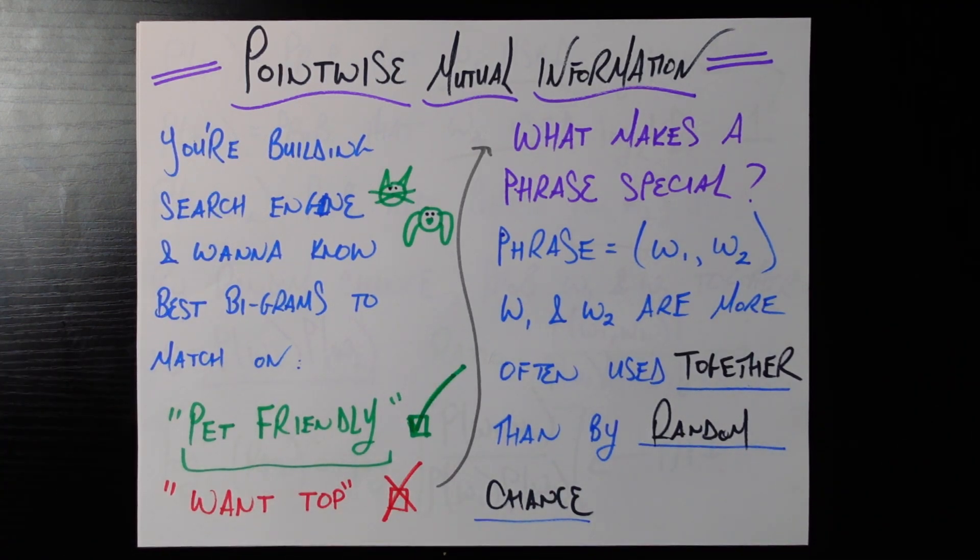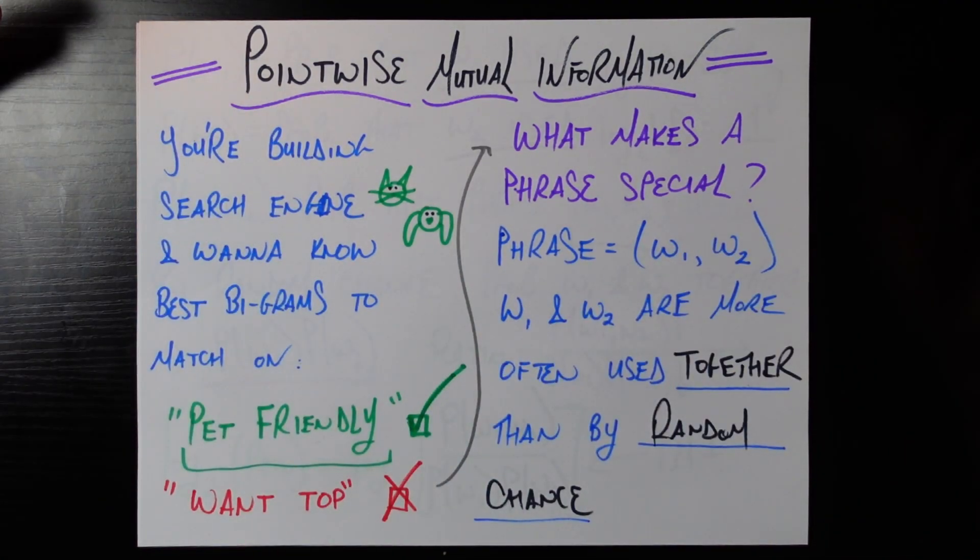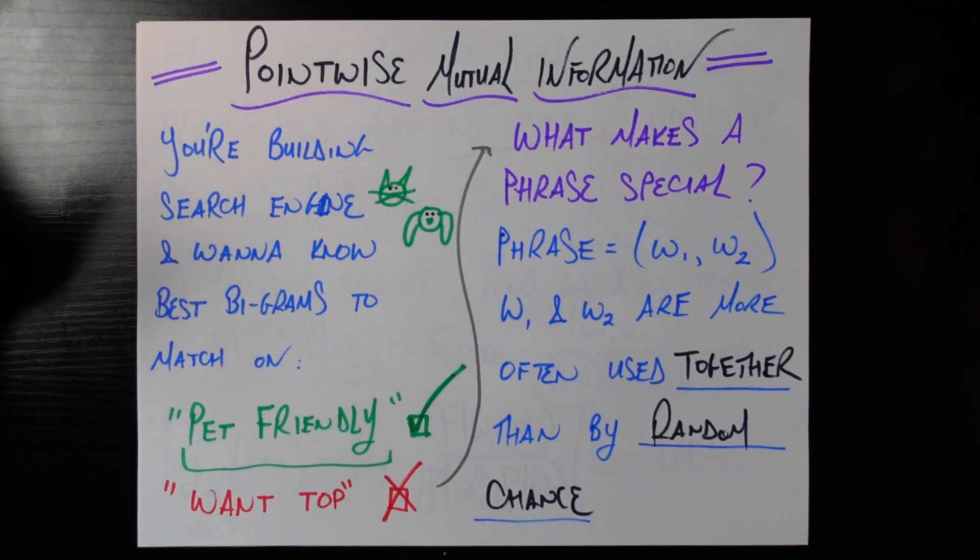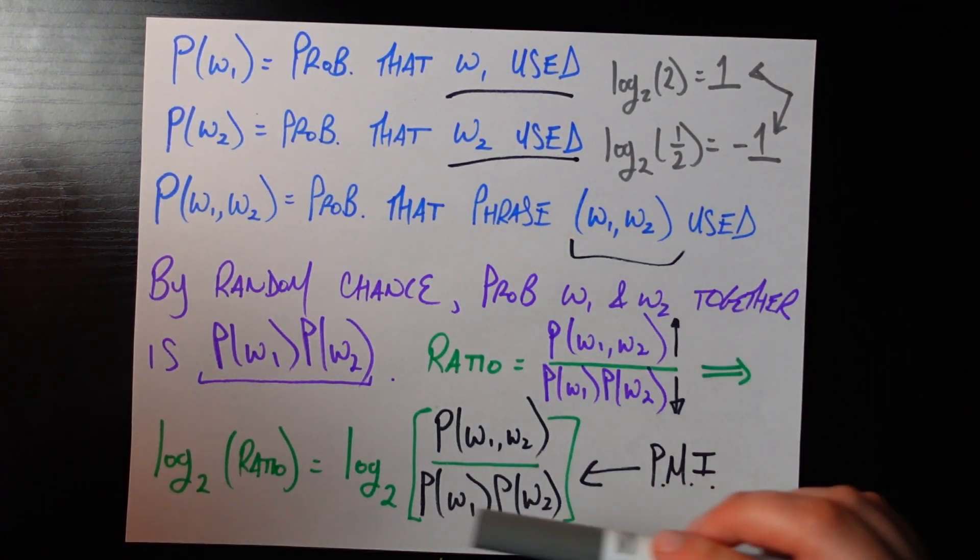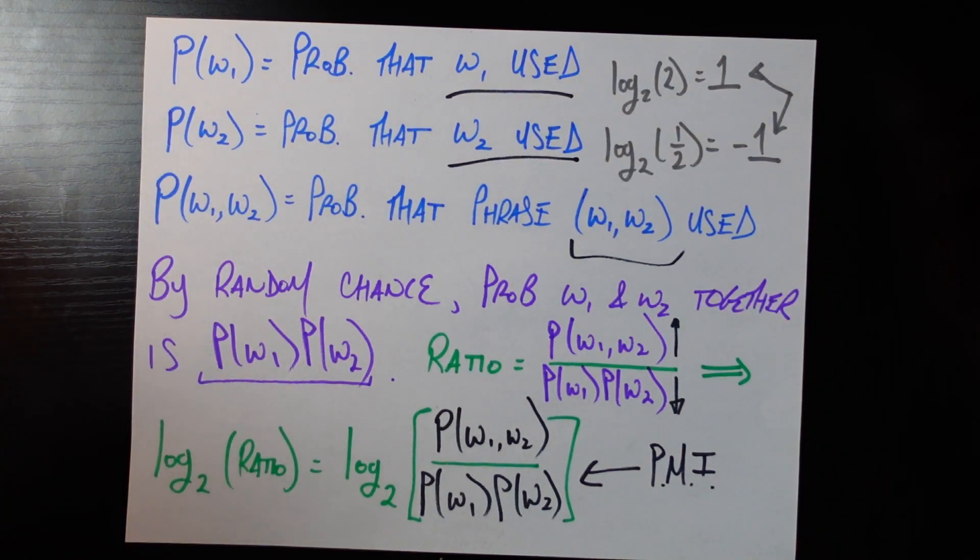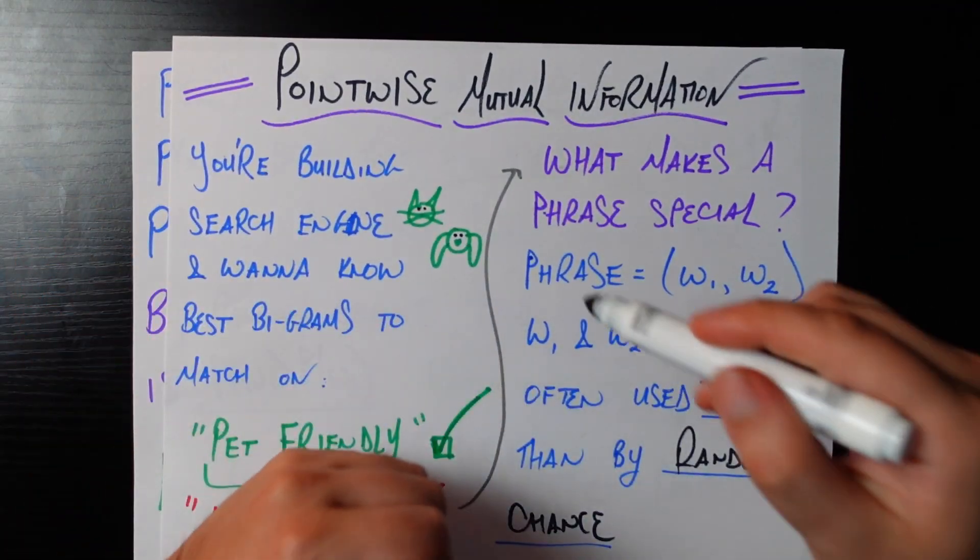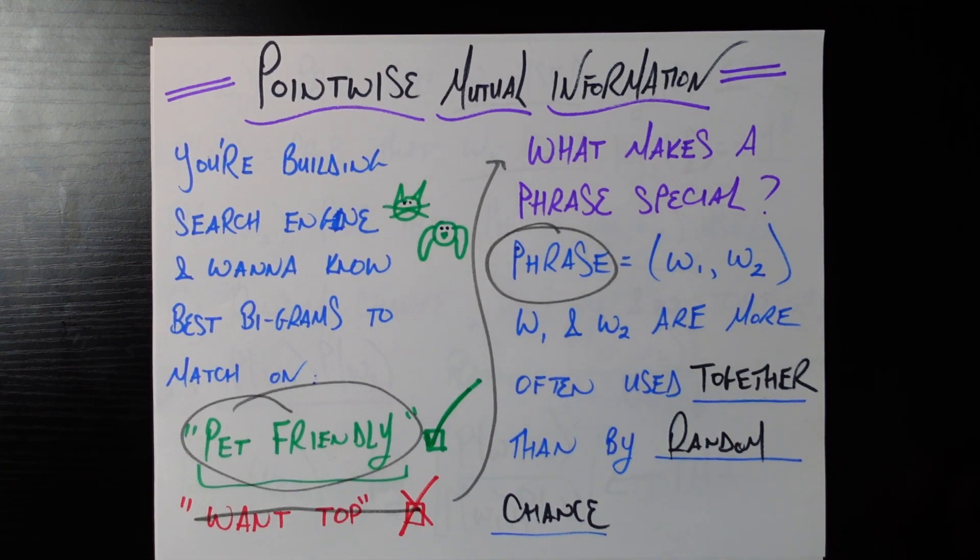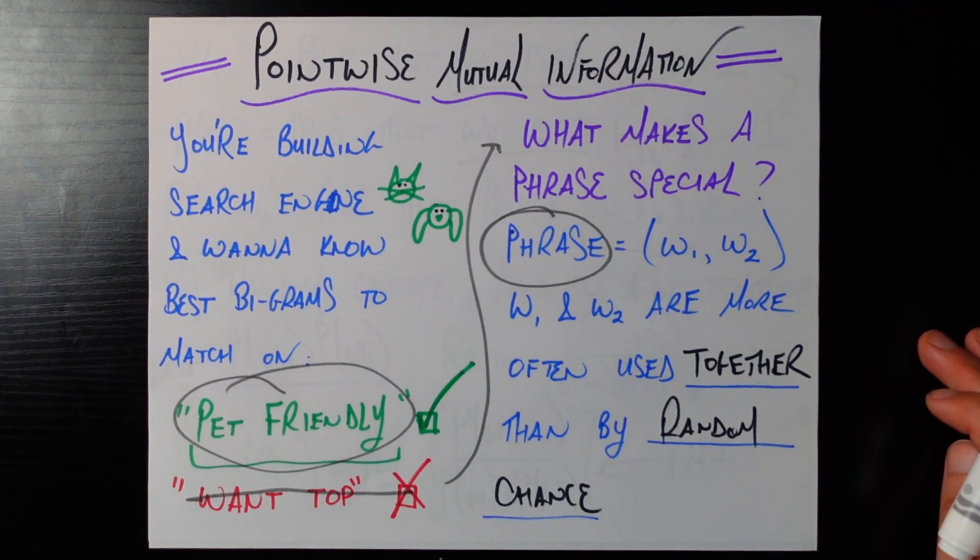Because going back to how would we use pointwise mutual information to help us solve this motivating example well now we would go over all the bigrams we could potentially have of course that's going to be way too many bigrams to store in our search index we just want to know what are the ones that actually matter we would go ahead and calculate the pointwise mutual information for all of those bigrams and the ones who have a pointwise mutual information that's very high in other words those where the words w1 w2 appear way more often than we would expect by random chance alone are exactly what we're going to call phrases and it's exactly those phrases like pet friendly but unlike want top that we want to index in our search engine. You don't have to even think of a search engine you can just use this to come up with what are phrases that are used in the english language or in my domain that i'm working in.